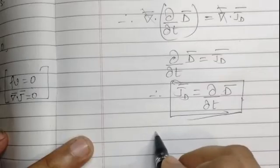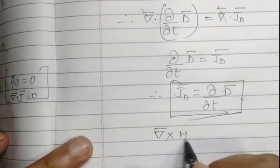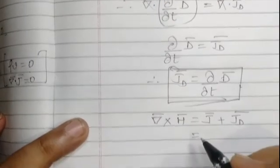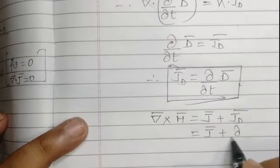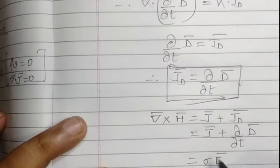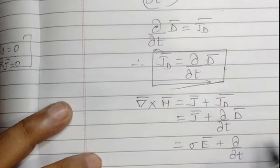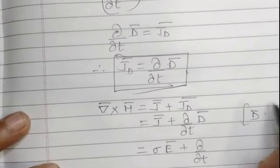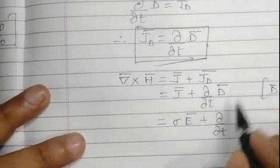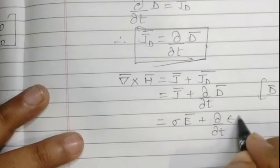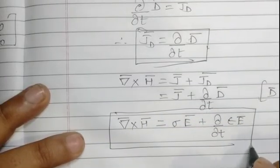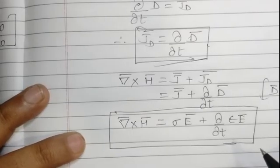This is the new term introduced in the modified Ampere's Circuital Law. The modified law is: del cross H equals J plus J_d, which equals J plus del/del-t of D. Now, J can be written as sigma times E (Ohm's law), and D equals epsilon times E, so del/del-t of D equals del/del-t of (epsilon times E). This gives the complete modified Ampere's Circuital Law for time-varying fields. Thank you.